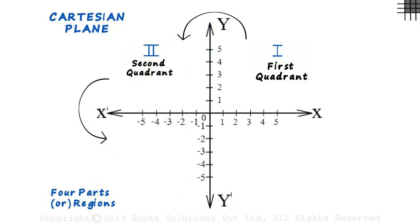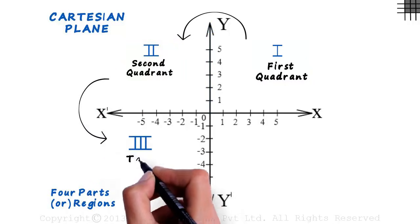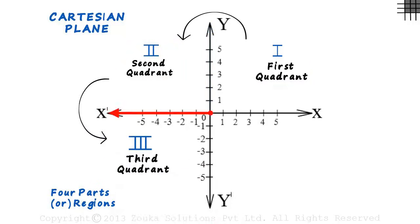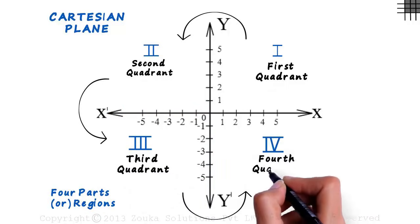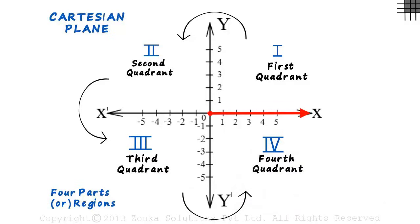Moving in the anti-clockwise direction, this is the third quadrant, where the X as well as the Y values are negative. This region is the fourth quadrant. The X coordinates are positive and the Y coordinates are negative.